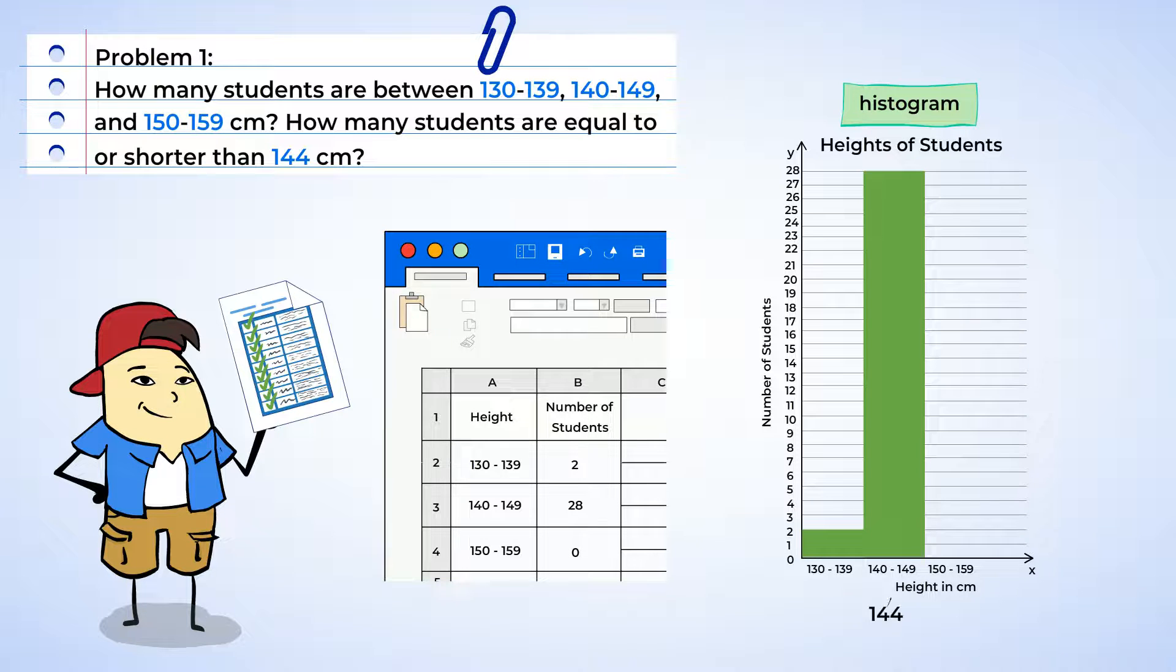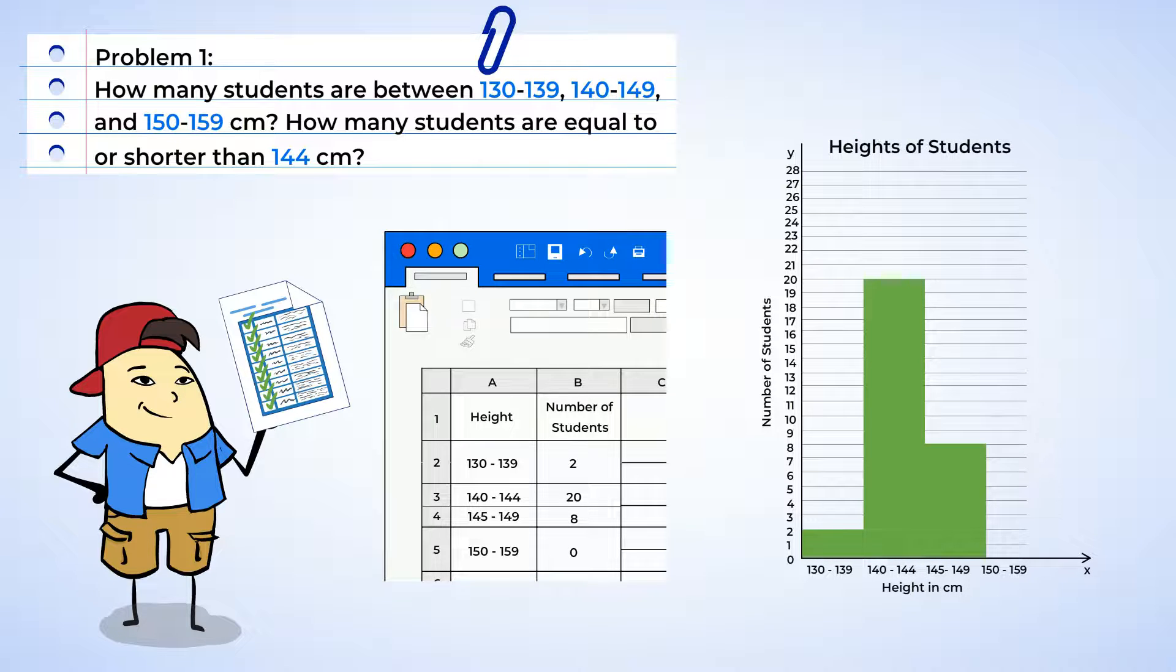But having these ranges, we can't see the number of heights that are equal to or shorter than 144 centimeters. How can we organize the buckets to answer both questions? Hmm, if we split the bucket of 140 to 149 in half, we would get 140 to 144, and 145 to 149.